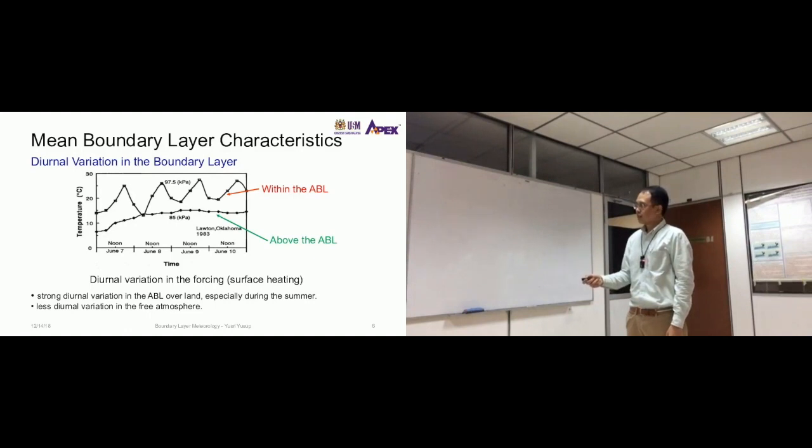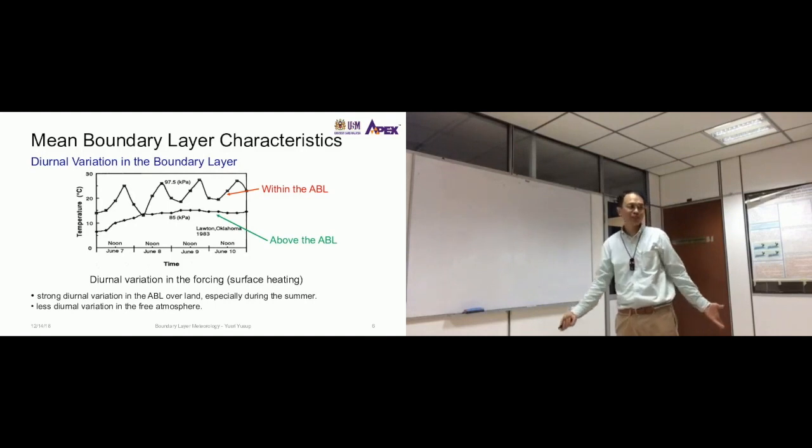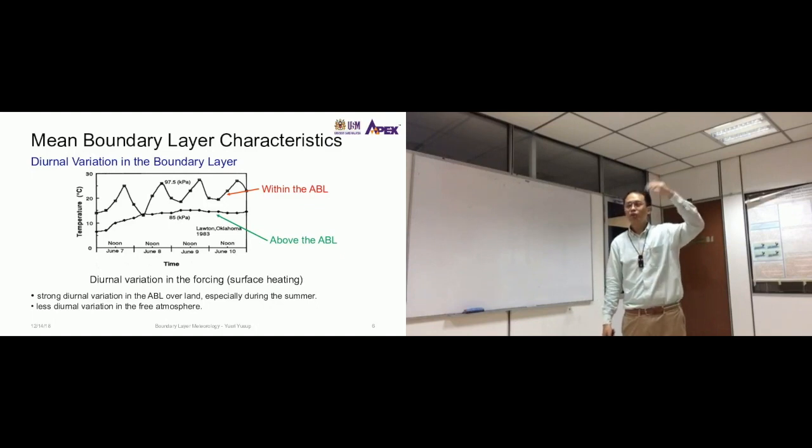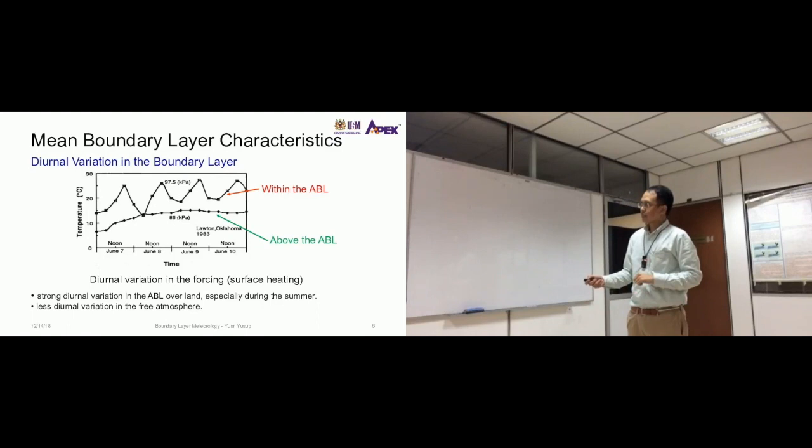A strong diurnal variation in the atmospheric boundary layer over land, especially during summer. Over here, it's always summer, so we can expect in Malaysia, in tropical regions, that there's a strong diurnal variation. That means very tall atmospheric boundary layer during the day and very short atmospheric boundary layer at night. If it's above the ABL, then there's less diurnal variation in the free atmosphere or somewhere above the atmospheric boundary layer.